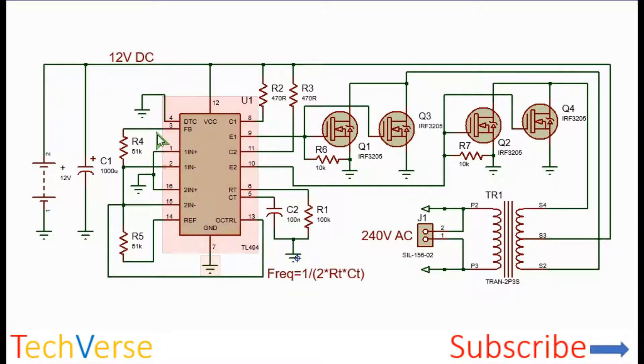So 12 and 7 are the power pins of the IC. Pull down the dead time control pin 4 to ground to ensure the dead time is minimum, 3% by default. Then you need to disable the error amplifiers by connecting the non-inverting terminals, pin 16 and 1 to ground and the inverting terminals pin 2 and 15 to 5 volts generated by pin 14.